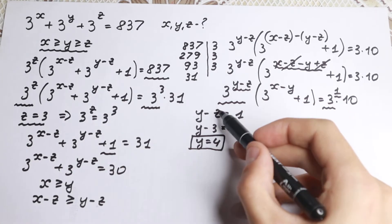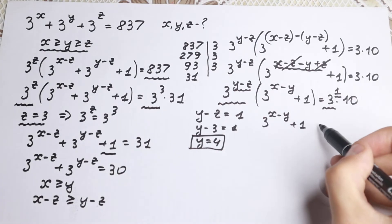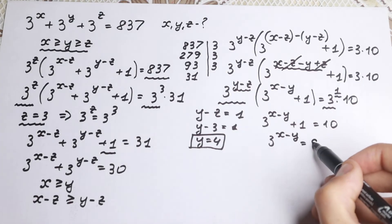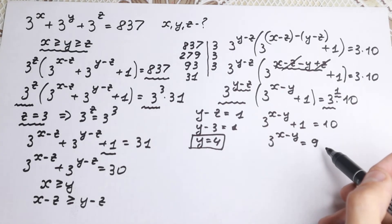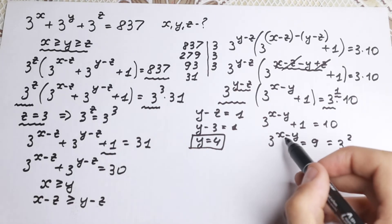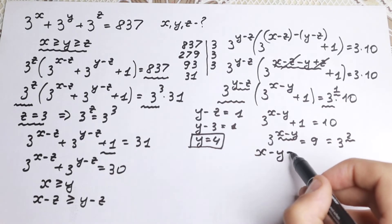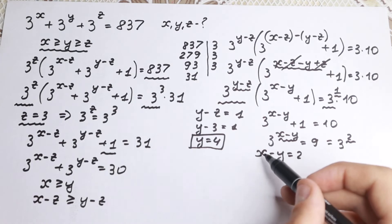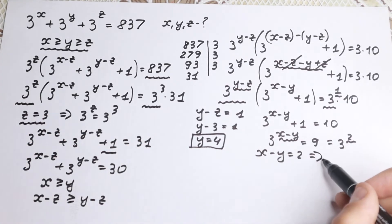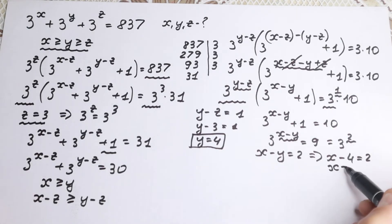Now we cancel those matched factors. We're left with 3 to the power x minus y, plus 1, equals 10. Bringing the 1 to the right-hand side: 3 to the power x minus y equals 9. This is a classic exponential equation — 9 equals 3 squared — so x minus y equals 2. Since y equals 4, we get x minus 4 equals 2, therefore x equals 6.